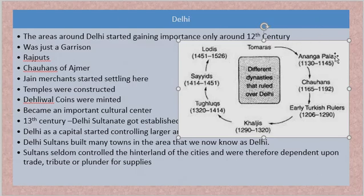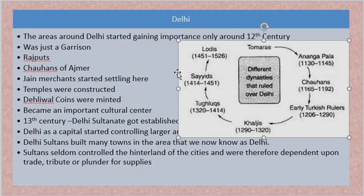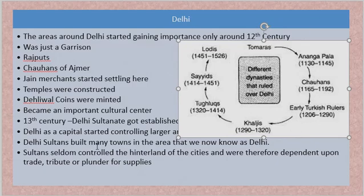Looking at the timeline, the Pala empire was around Delhi from 1130 to 1145, then the Chauhans ruled from 1165 to 1192. Then Turkish rulers were there for almost 90 years, the Khaljis for around 30 years, the Tughlaqs for almost 100 years, the Sayyids for around 40 years, and the Lodhis for around 75 years. Very few dynasties had over 100 years of control, which is why we don't have something called a single kingdom ruling Delhi for a long period.